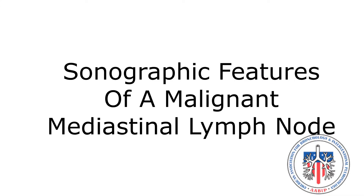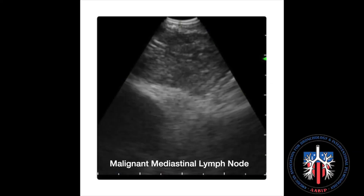Sonographic features of a malignant mediastinal lymph node. This is an ultrasound image of a malignant lymph node using a linear EBUS bronchoscope.